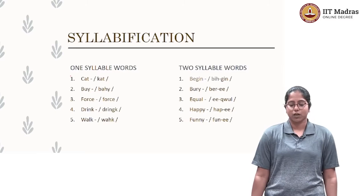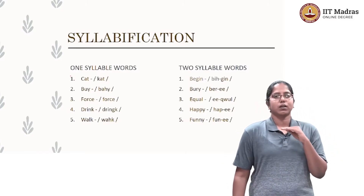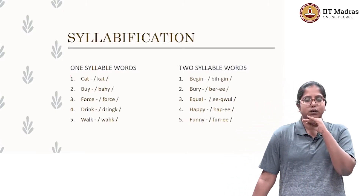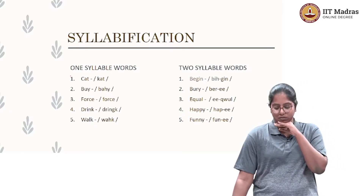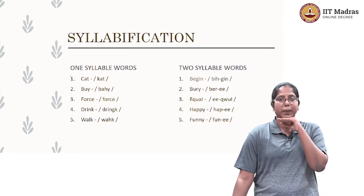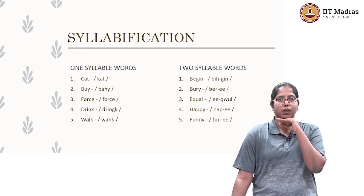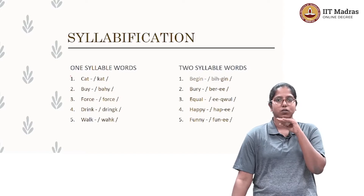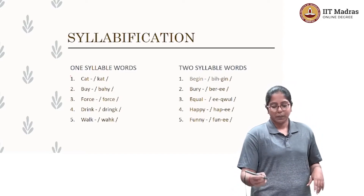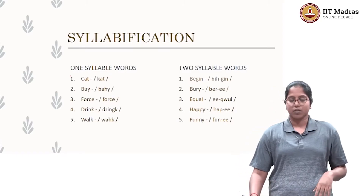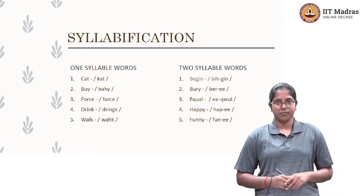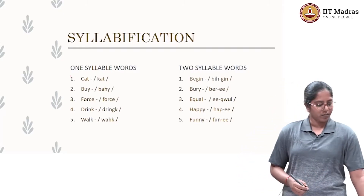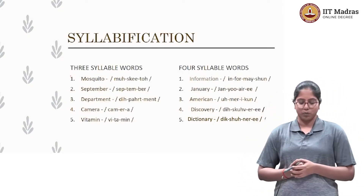Now look at two-syllabled words. Let's try it with the jaw-drop experiment. Begin, bury — my jaw drops two times. So begin, bury, equal, happy, funny are all two-syllabled words.